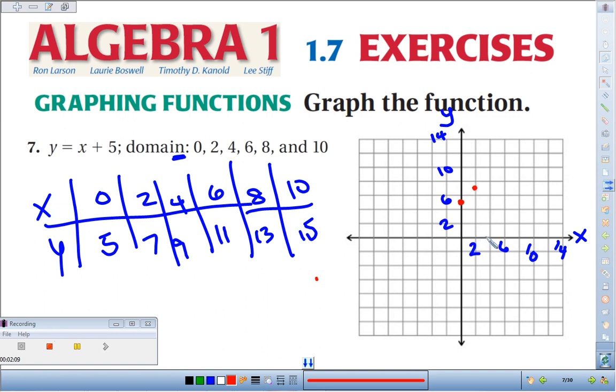4, 9. So over 2, 4, up 2, 4, 6, 8. There's 9. You can see things are lining up pretty nice here.